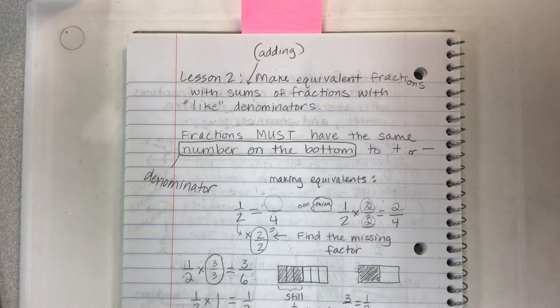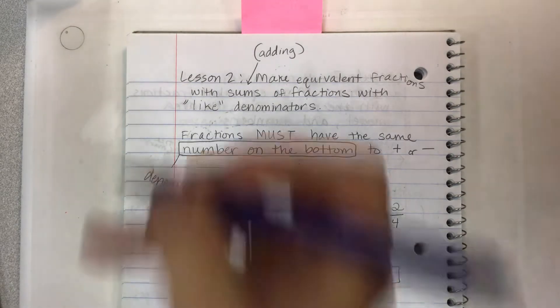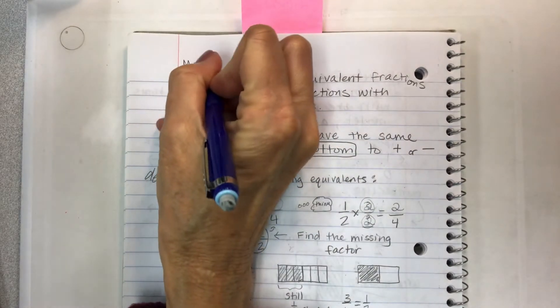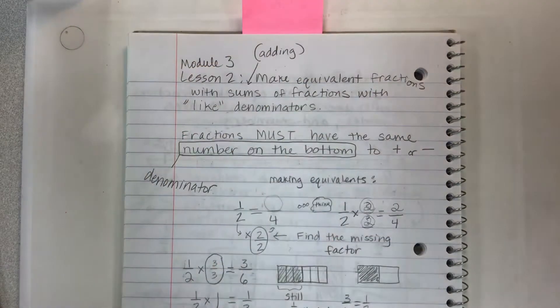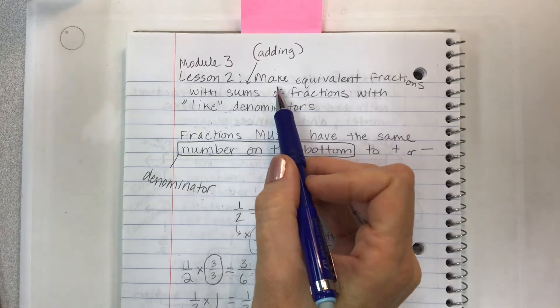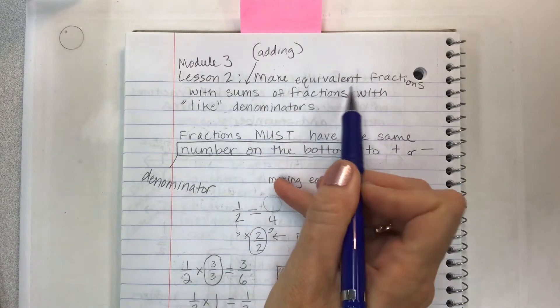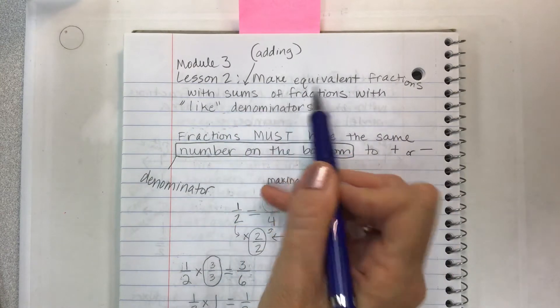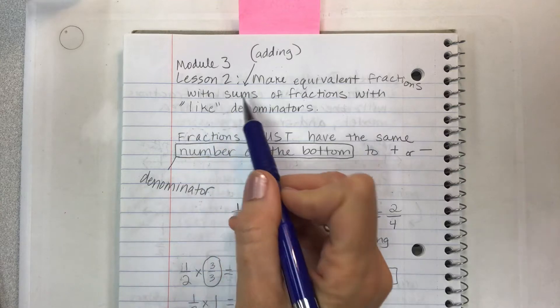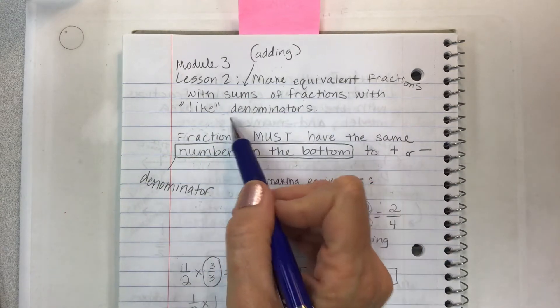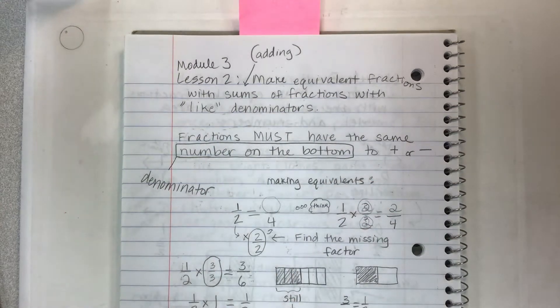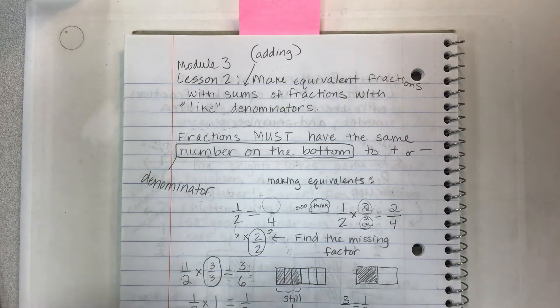Hey kids! Welcome to Module 3, Lesson 2, a math video for Eureka Math. This is making equivalent fractions. Our objective today is to make equivalent fractions with sums of fractions with like denominators. So we're going to be taking a look at different fractions and kind of taking them apart and putting them together in other ways.